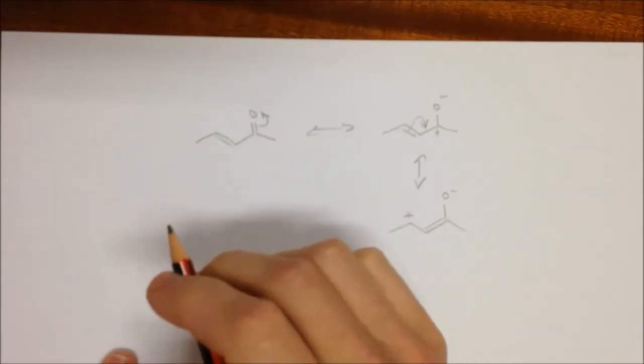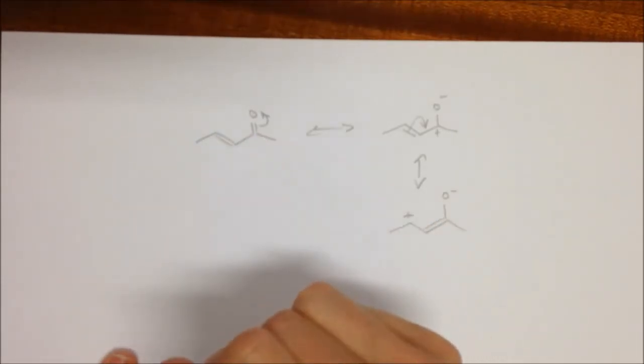Now remember, this is just an explanation. This is not happening in the molecule. This is not something that we can isolate and see. It's just an explanation to show that this carbon over here actually has a bit of a positive charge on it. This carbon also has a bit of a positive charge. So there are two places that have slight positive charges on them.